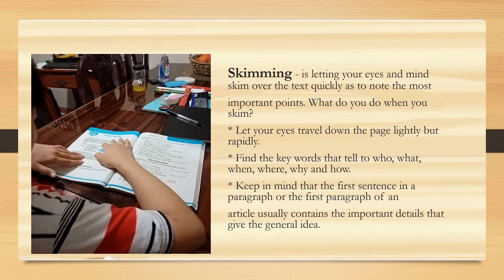Skimming is letting your eyes and mind skim over the text quickly so as to note the most important point. What do you do when you skim? First, let your eyes travel down the page lightly but rapidly. Second, find the keywords that tell who, what, when, where, why, and how. And third, keep in mind that the first sentence in a paragraph or the first paragraph of an article usually contains the important details that give the general idea. As you scan and skim, you may underline, circle, or put any mark on words or phrases which are to be remembered.